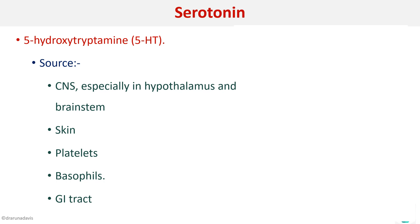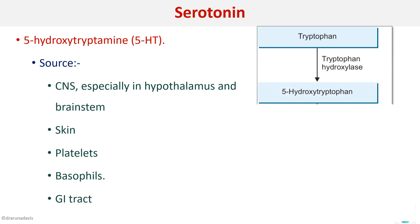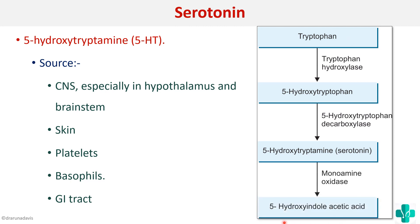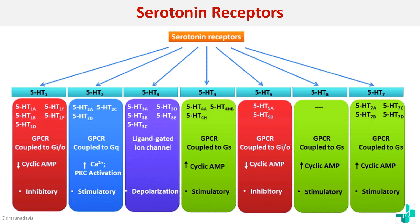Serotonin is produced from the amino acid tryptophan. Tryptophan, in the presence of the enzyme tryptophan hydroxylase, will produce 5-hydroxytryptophan, and this in turn is converted to 5-hydroxytryptamine, which is serotonin. The important point to remember is it is produced from tryptophan, and it is metabolized by the enzyme monoamine oxidase into its byproduct, 5-hydroxyindoleacetic acid.